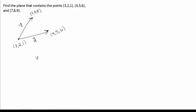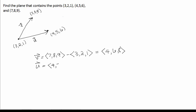So V is going to equal (7, 8, 9) minus (3, 2, 1), which would be (4, 6, 8). And U is going to equal (4, 5, 6) minus (3, 2, 1), which is (1, 3, 5). So now we have two vectors that lie in our plane.